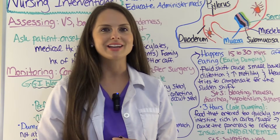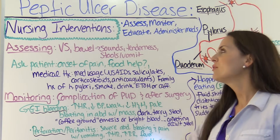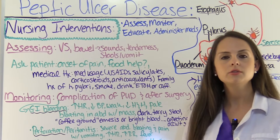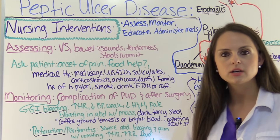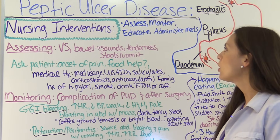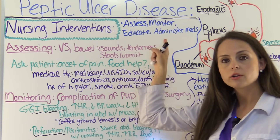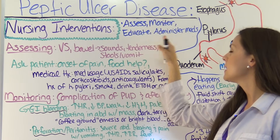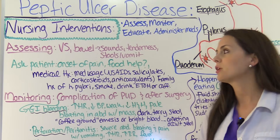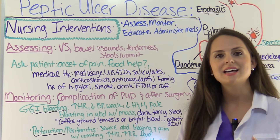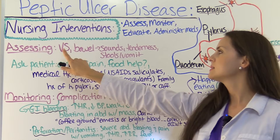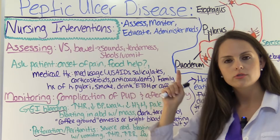Let's get started with nursing interventions. What are we going to be doing for this patient who has peptic ulcer disease as the nurse? Our goal is to assess them, monitor them, educate them, and administer medications per the physician's order. First, let's talk about assessing — specifically assessing those vital signs and making sure they're normal.